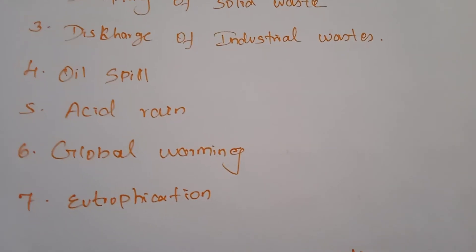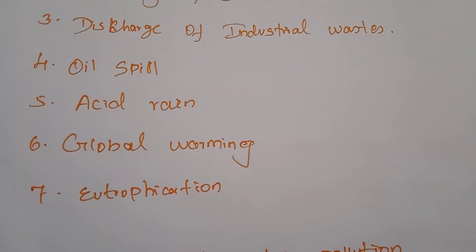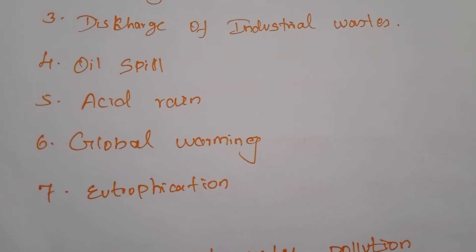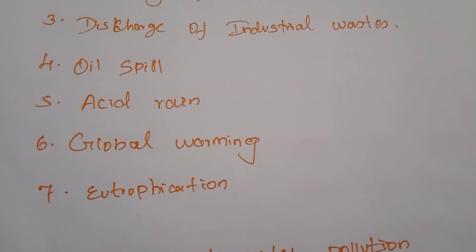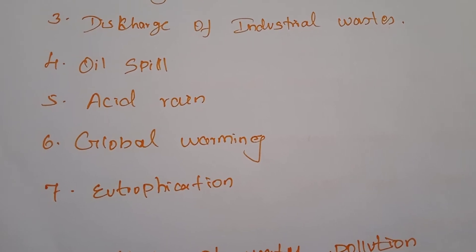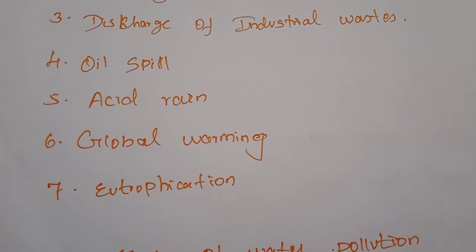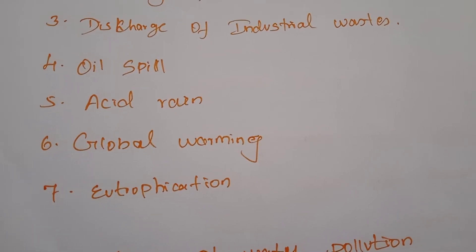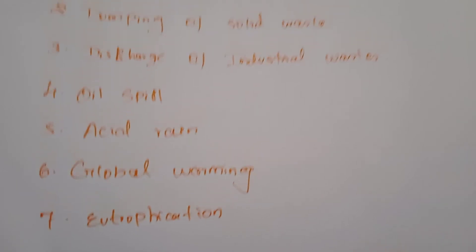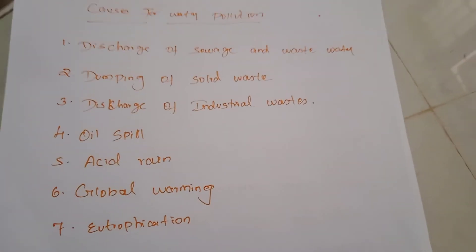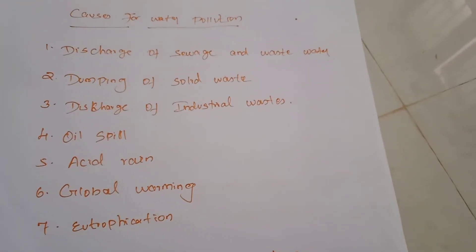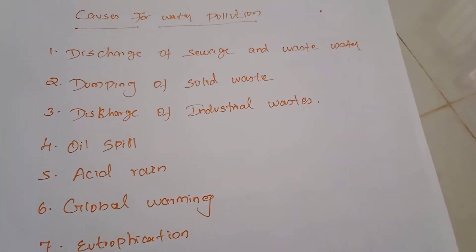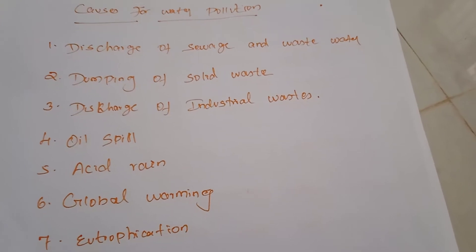Next, eutrophication. Eutrophication is an increased level of nutrients in water bodies, which results in a bloom of algae in the water. This also depletes the oxygen in water, which negatively affects fish and other aquatic animal populations. These are the main causes of water pollution, though you may know other reasons as well.